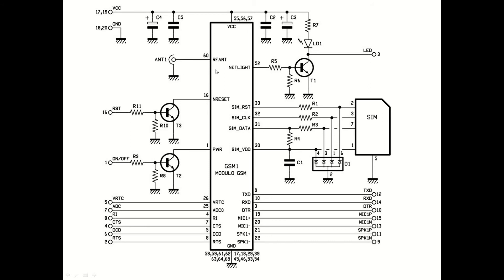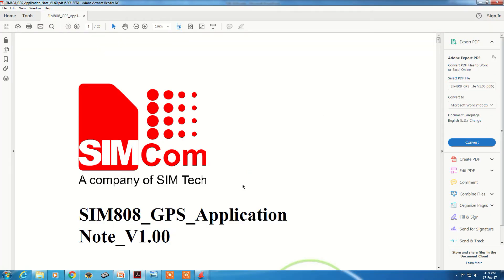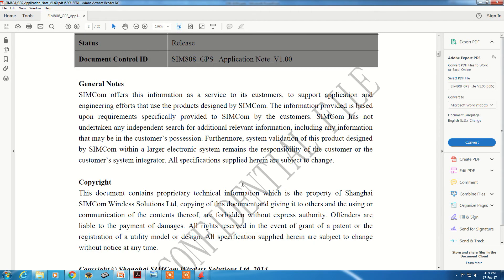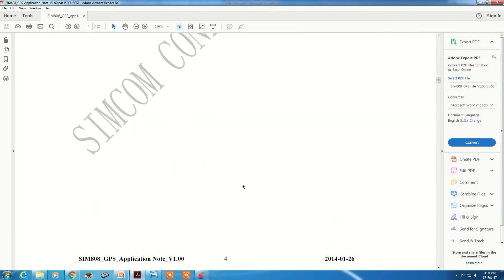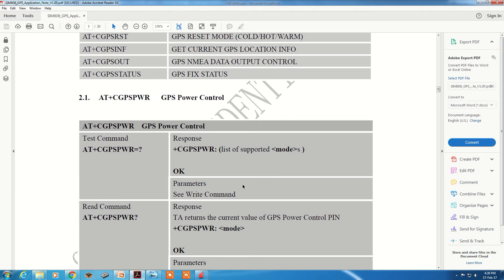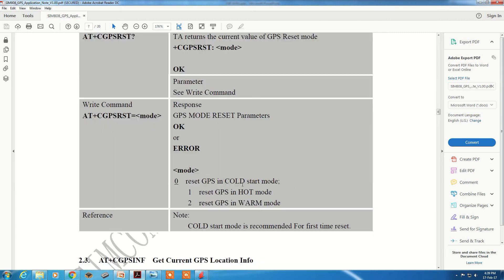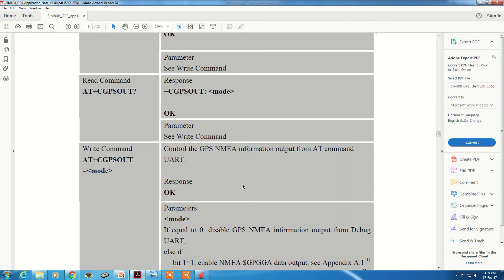Electrically, the VBAT is 3.4V to 4.4V as the module operating supply. It consumes a maximum of up to 500 mA. LEDs can be connected as indicators for module connectivity status. The SIM card interface requires SIM VDD, SIM data, SIM clock, and SIM reset connections. The net light is an output LED indicator for connectivity. Power on/off and reset are inputs. The module also includes a microphone interface, speaker interface, and TXT/RXT pins for programming.